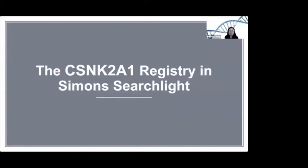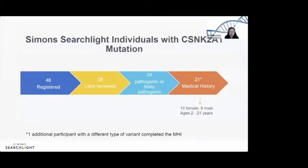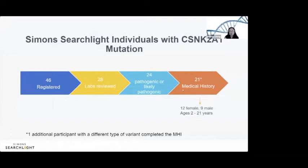Let me give you some information about CSNK2A1. This is not a common condition, but we have gathered information on a number of people. We started with approximately 46 people who registered. Of those, about 70% sent us their test reports to review. We confirmed that CSNK2A1 was the right diagnosis in about 24 individuals, and of those, almost everyone who was eligible went on to complete their medical history with us.